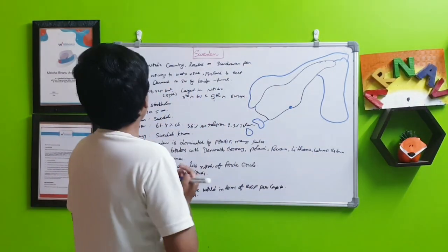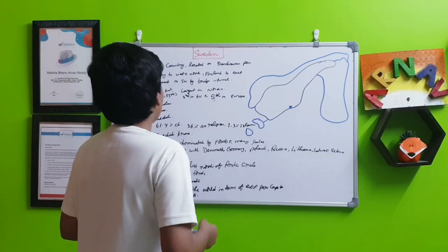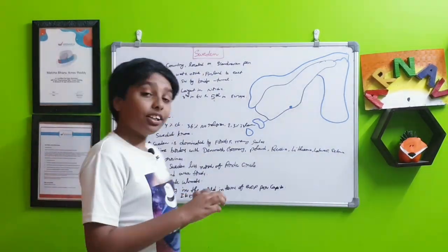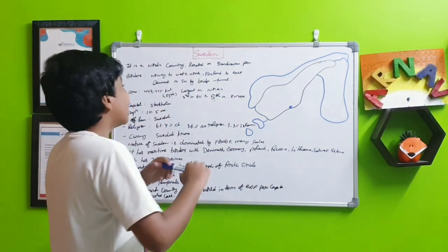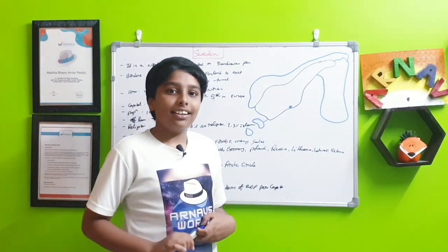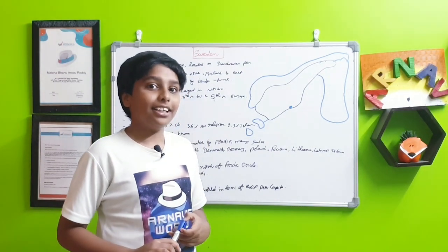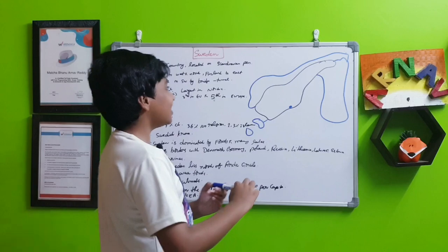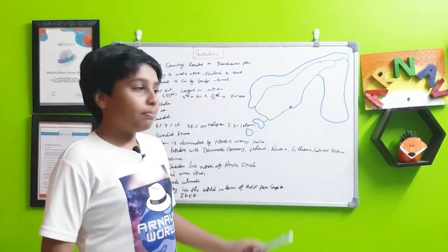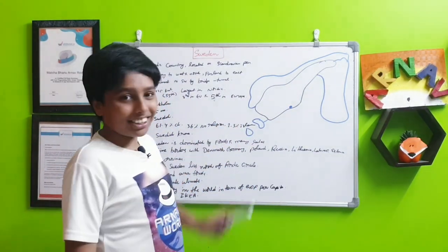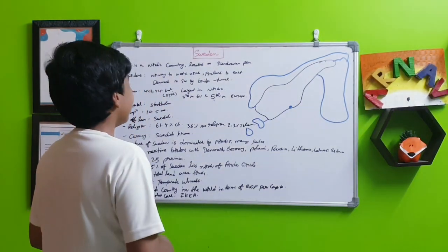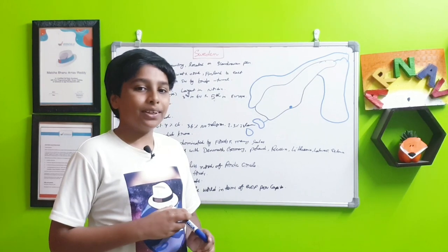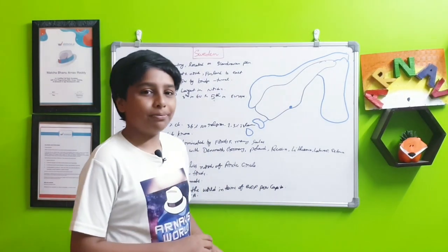The area of Sweden is 447,425 square kilometers, which makes it the 55th largest country in the world—pretty large but not as large as many big countries. It is the largest country in the Nordic region, bigger than Finland and Norway, and also the third largest in the EU and fifth largest in Europe.